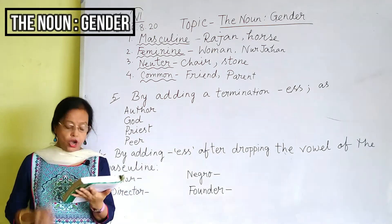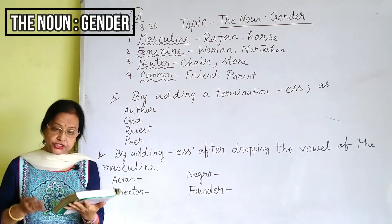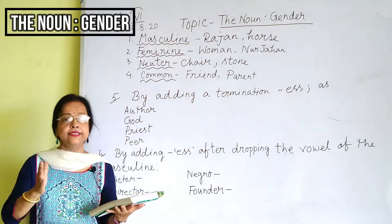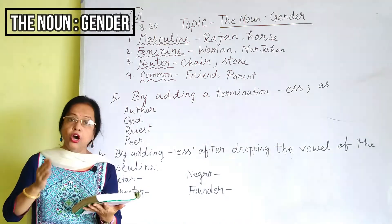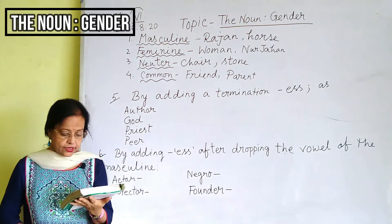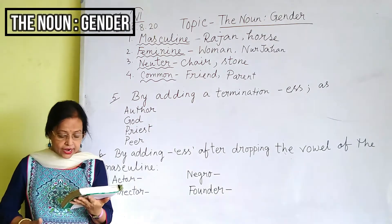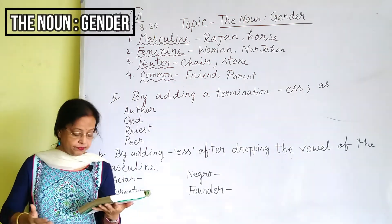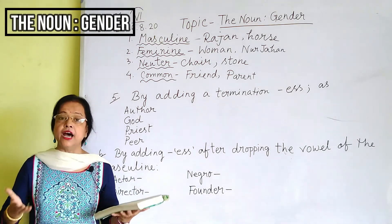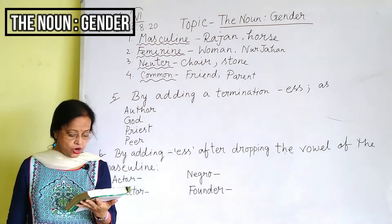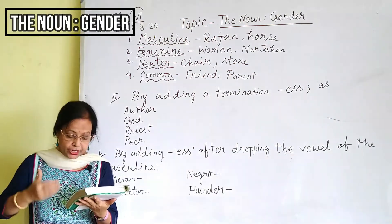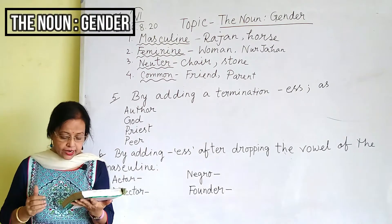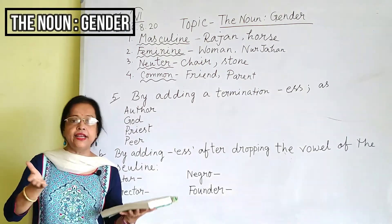Objects associated with strength, violence, etc. are sometimes regarded as masculine. For example: the sun, winter, summer, time, death, etc. Objects associated with beauty and gentleness are similarly regarded as feminine.